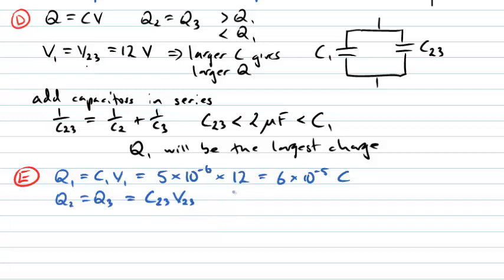What is this C23? Well, above we saw how we would calculate that. 1 over C23 will equal 1 over C2 plus 1 over C3. If we do everything in units of microfarads, C2 is 2 microfarads and C3 is 3 microfarads. So we've got a half plus a third.